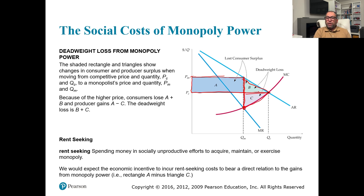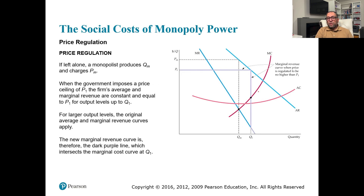Rent seeking — spending money in socially unproductive efforts to acquire, maintain, or exercise monopoly power — is another social cost. We would expect the economic incentive to incur rent-seeking costs to bear a direct relation to the gains from monopoly power.